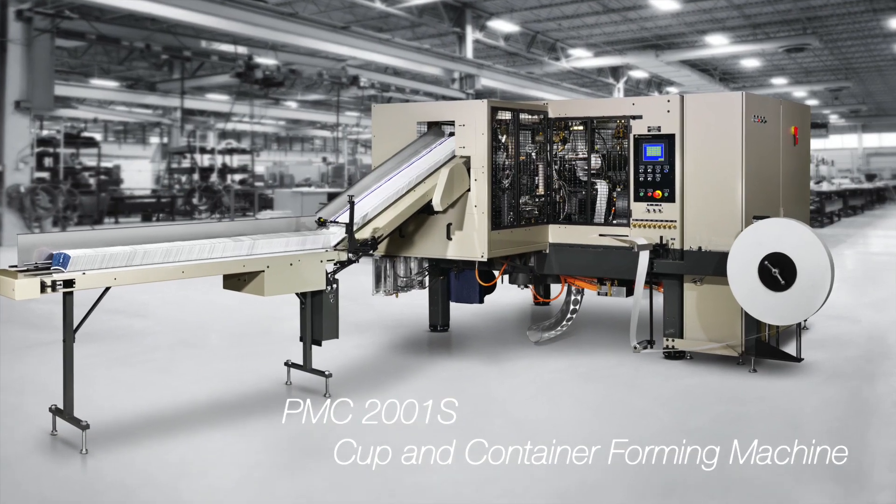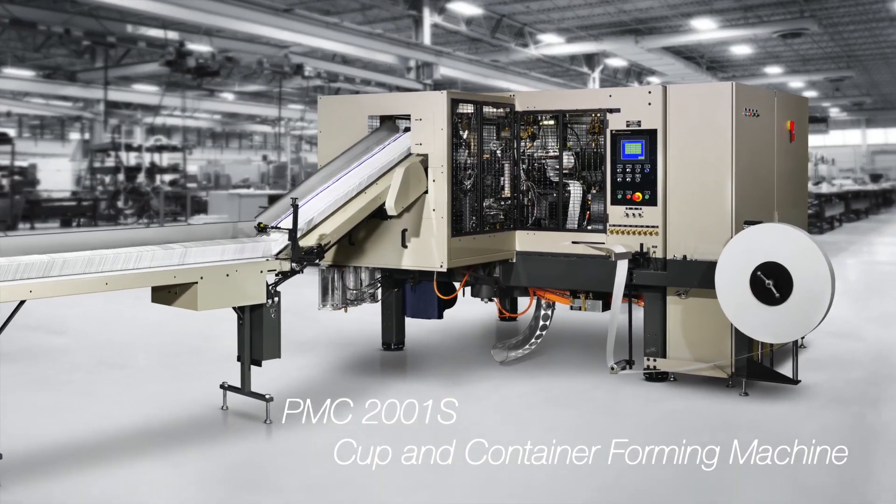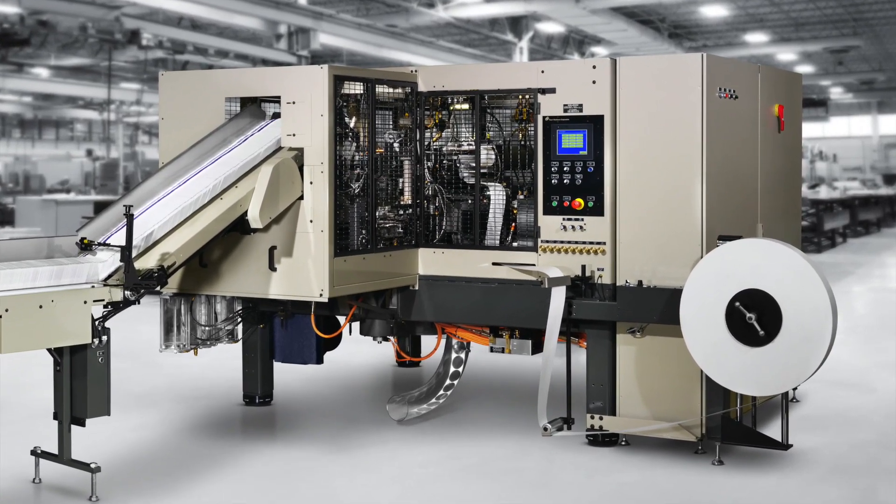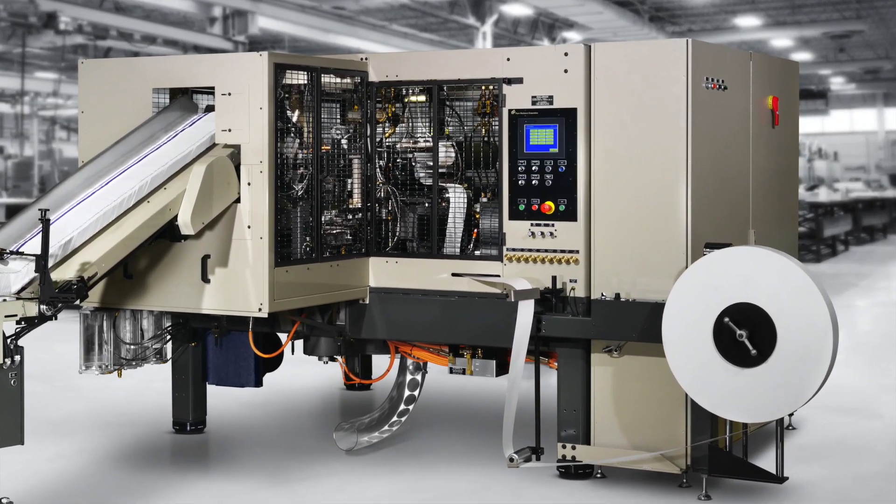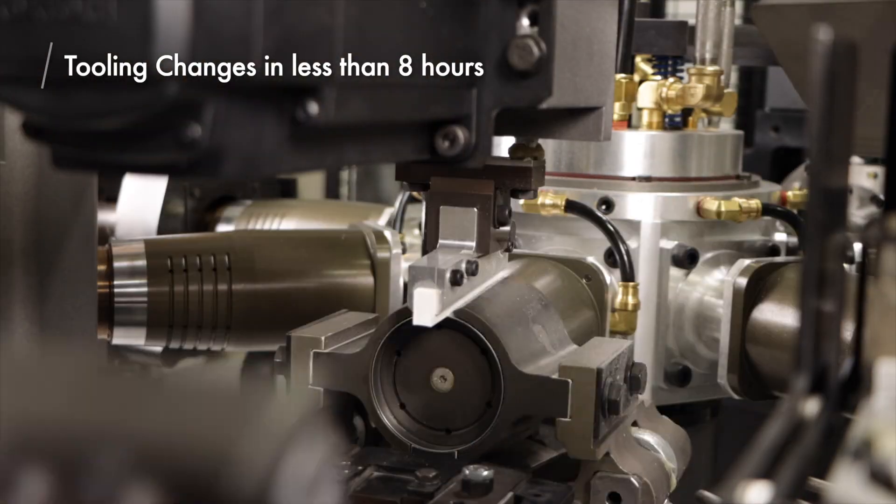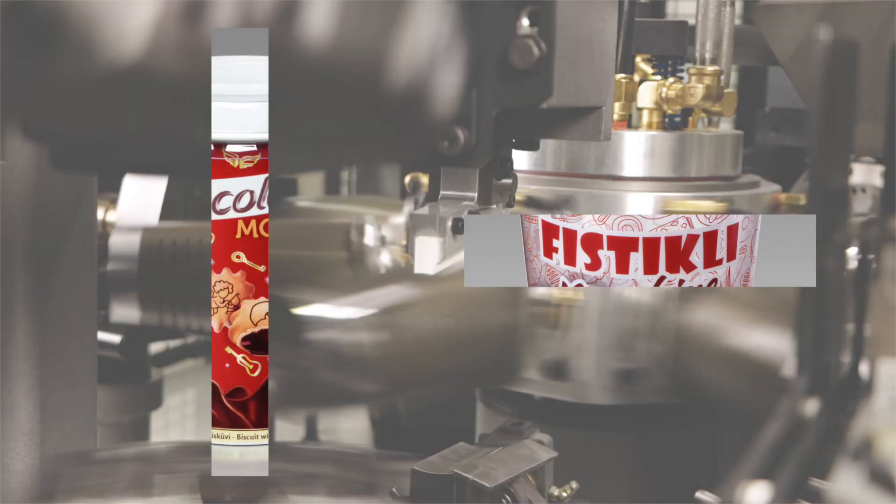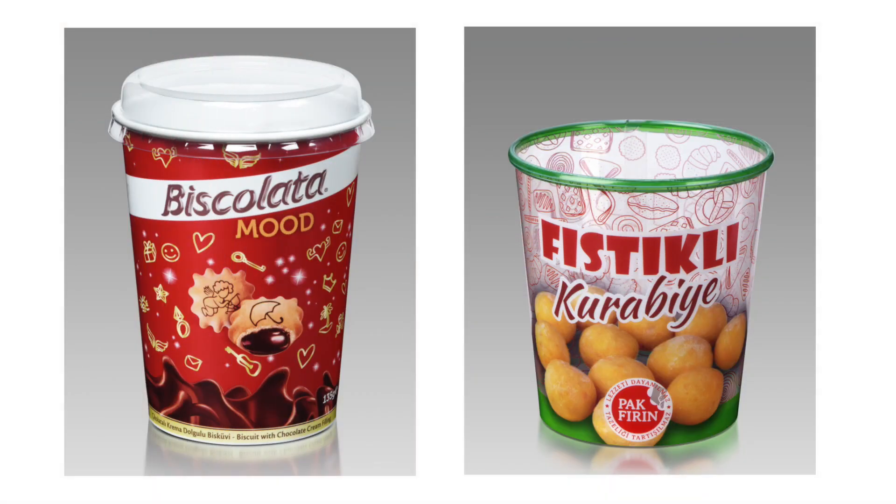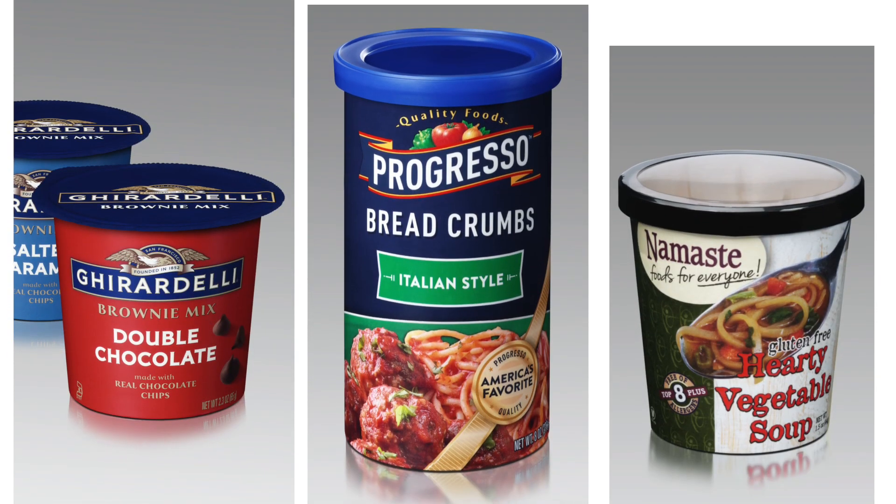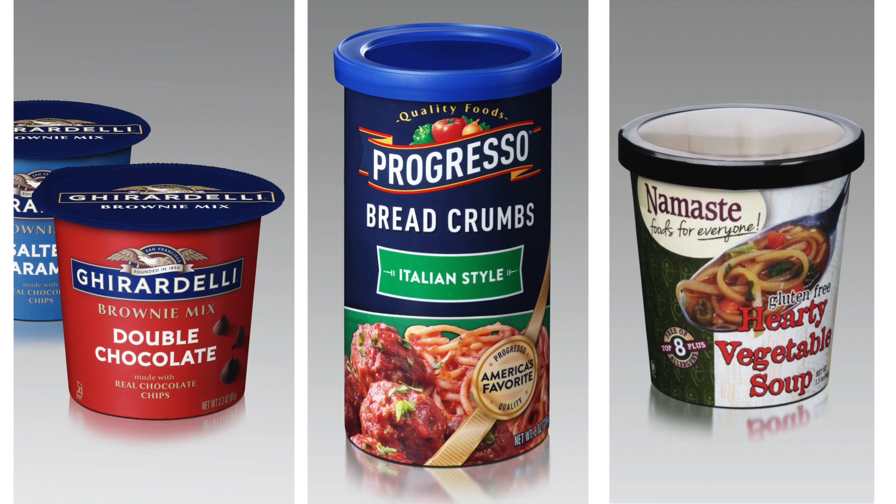The PMC-2001S continues this tradition of innovation with a new level of production flexibility made possible with advanced servo drive technology. Tooling changes can be made in less than a single shift. This allows converters and producers to switch cup and container sizes easily with minimal downtime. The built-in flexibility is ideal for short runs and new product introductions.